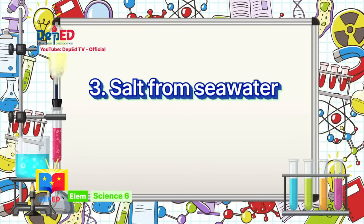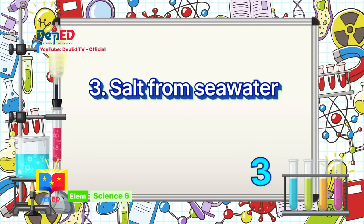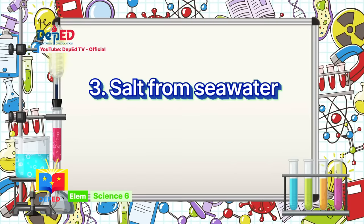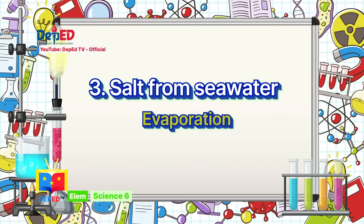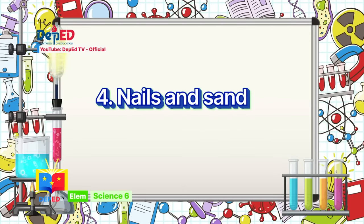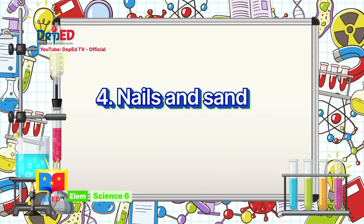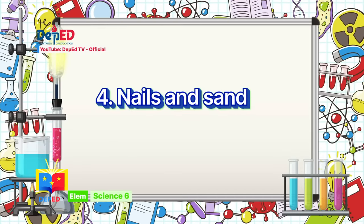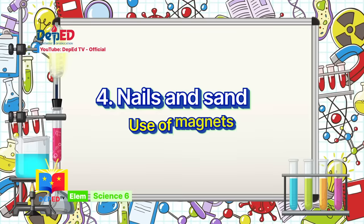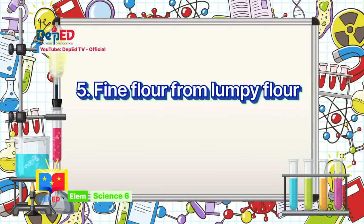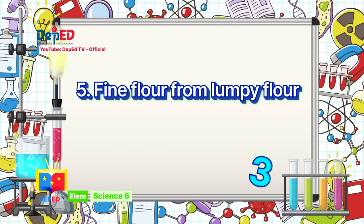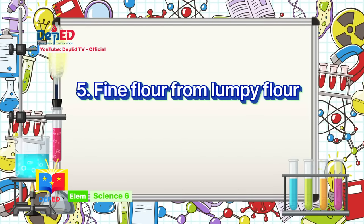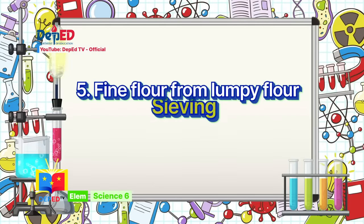Number 3: Salt from sea water — correct answer is evaporation. Number 4: Nails and sand — correct answer is use of magnets. Number 5: Fine flour from lumpy flour — correct answer is sieving.